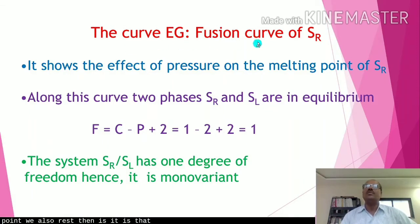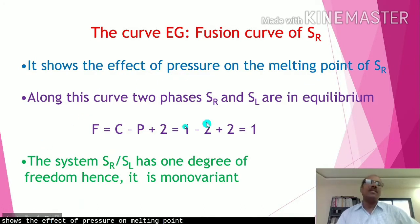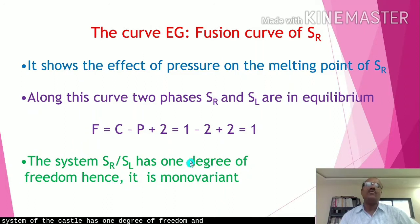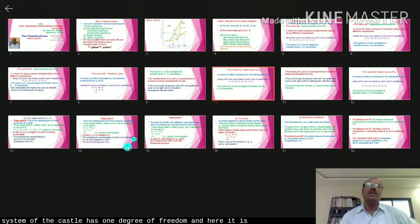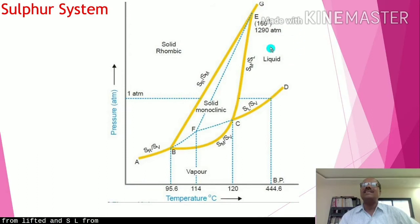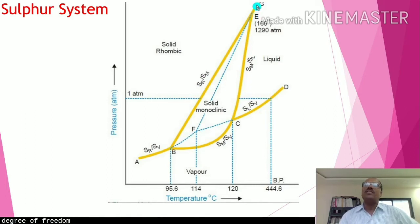Curve EG is the fusion curve of solid rhombic sulfur (SR). It shows the effect of pressure on the melting point of SR. Along this curve, SR and SL are in equilibrium. F = C − P + 2 = 1 − 2 + 2 = 1, so the system is monovariant along curve EG.